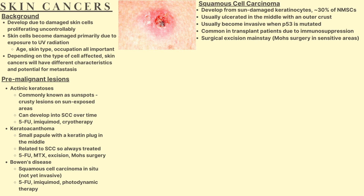Squamous cell carcinoma (SCC) develops from sun-damaged keratinocytes and accounts for 30% of all non-melanoma skin cancers. SCCs are usually ulcerated in the middle with an outer crust — as seen in the image on the left, there's an ulcerated region in the middle and some crust on the outside, distinguishing it from actinic keratosis. These usually become invasive when the tumor suppressor gene p53 is mutated. They're quite common in transplant patients due to immunosuppression, as immunosuppressive drugs suppress the body's natural response to cancer cells.